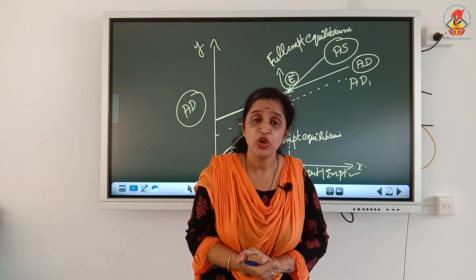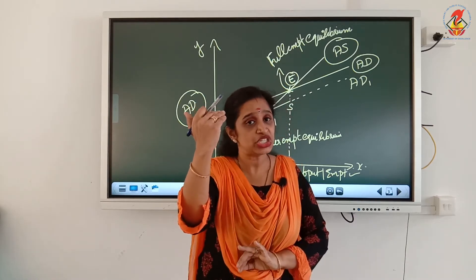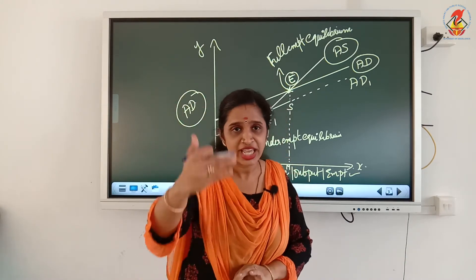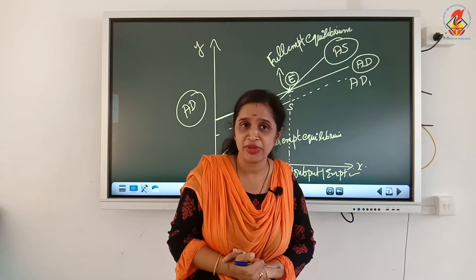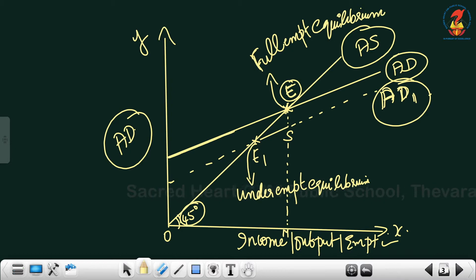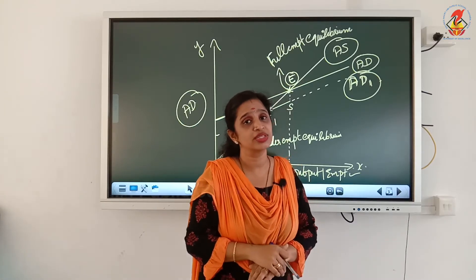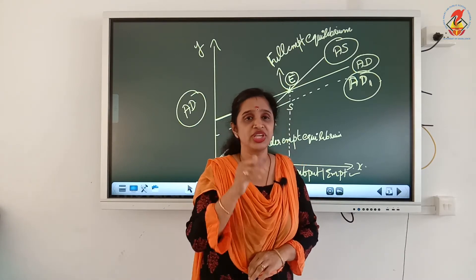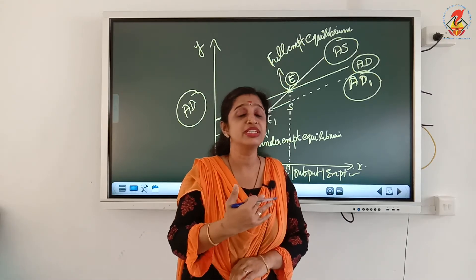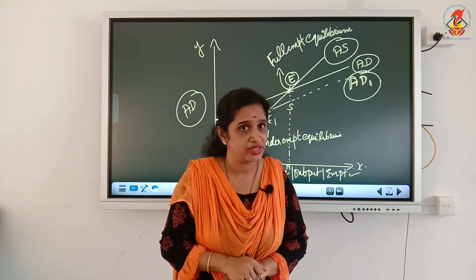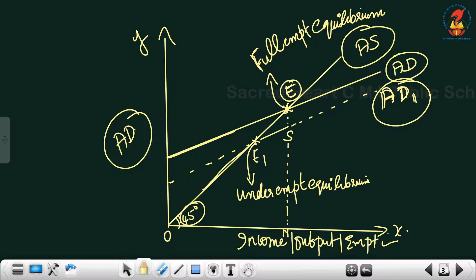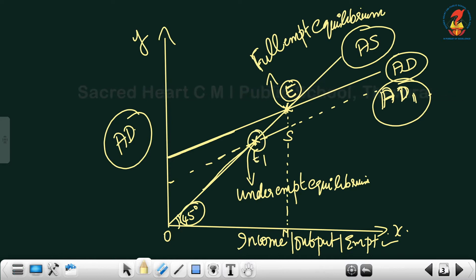When aggregate demand is less than aggregate supply, the aggregate demand curve shifts downwards. That downward shift represents deficient demand — if it were excess demand, it would shift upwards. The new aggregate demand curve, represented by a dotted line, is AD1. This new curve intersects the existing aggregate supply curve, which remains constant — only aggregate demand is changing by falling. AD1 intersects the aggregate supply curve at point E1.